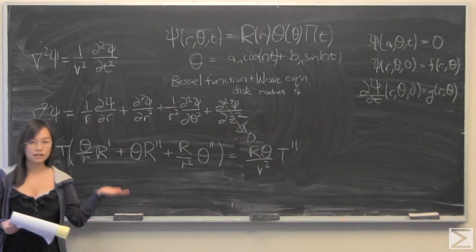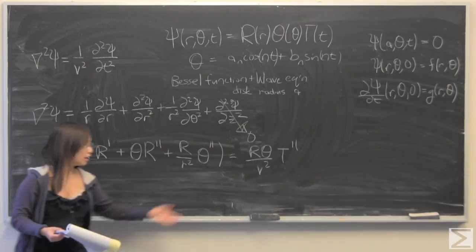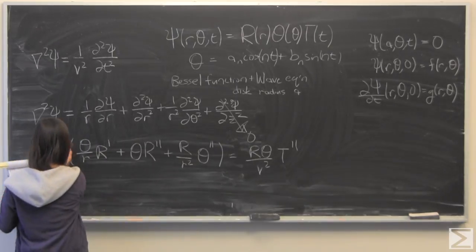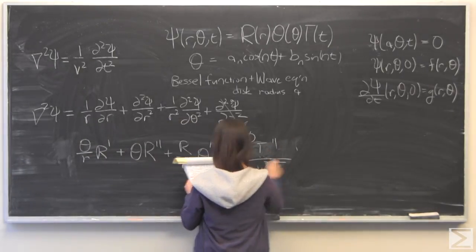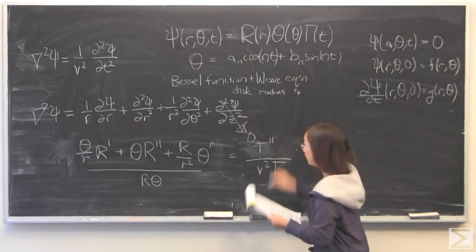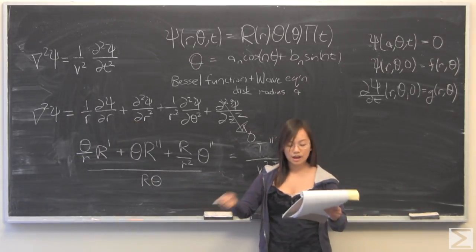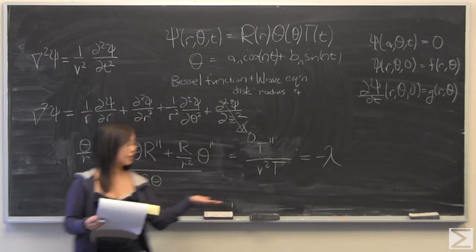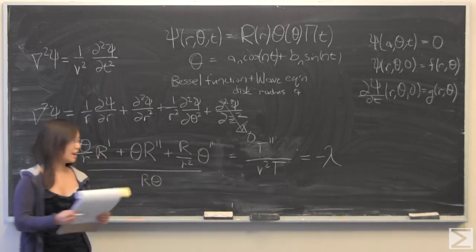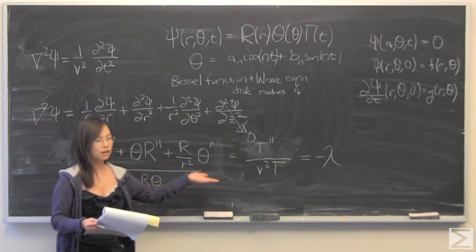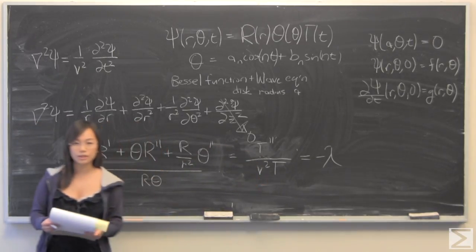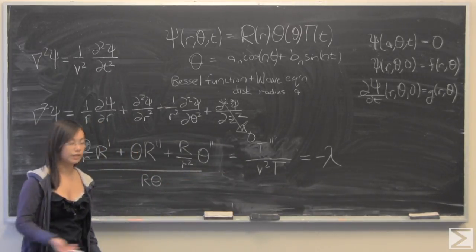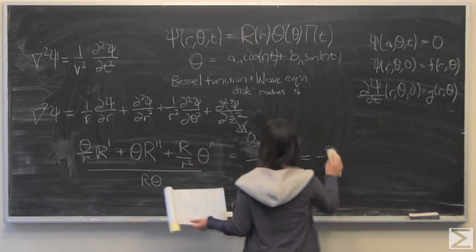The next step is to actually group terms together. I'm going to group the t's together, and then I'm going to divide out by capital R, capital theta. What that will give you is the following. I get this by shifting around terms a little bit. Then I'm going to arbitrarily call this something, and I'm going to call it negative lambda.